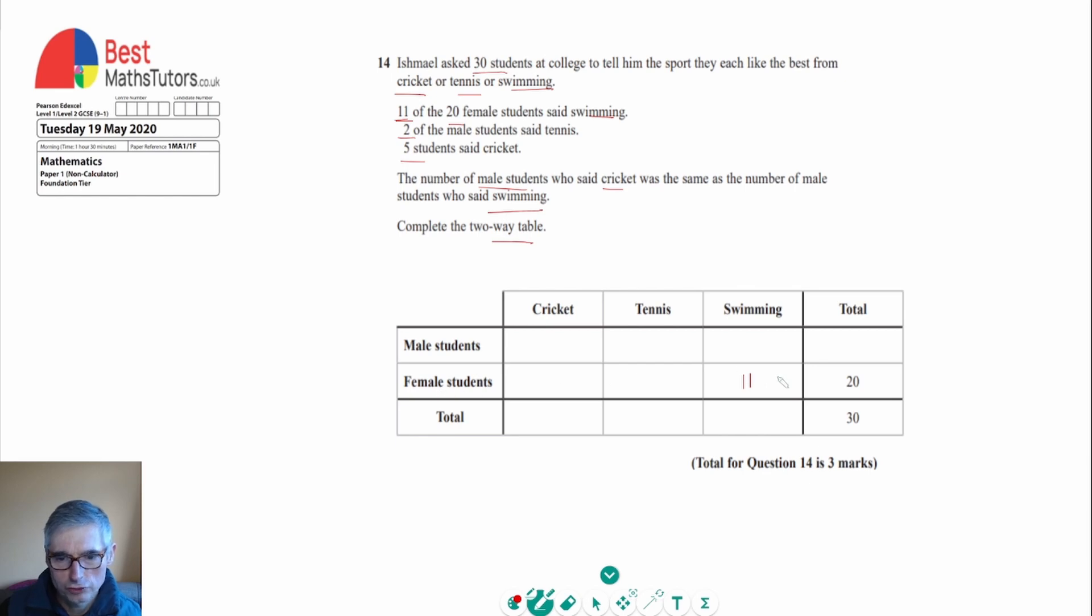We're also told that two of the male students said tennis, so again that's on the tennis column and it's the male students, so that can go there. And it says that five students said cricket, so this would be the total of both the male students and the female students, so that's going to be five and that's going to go there.